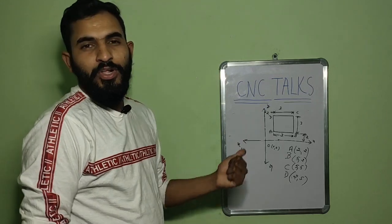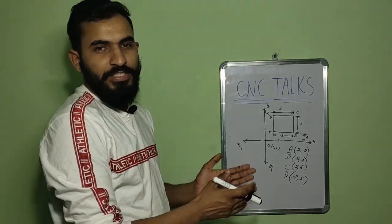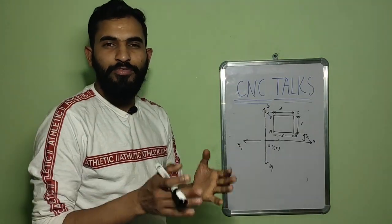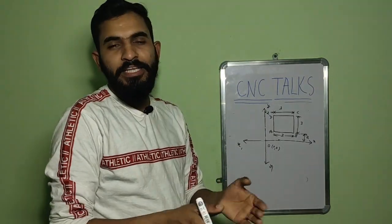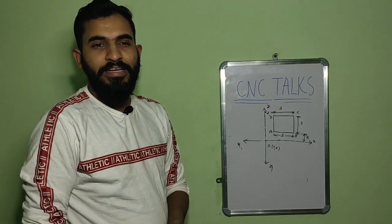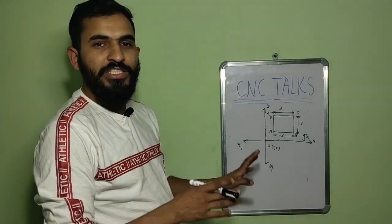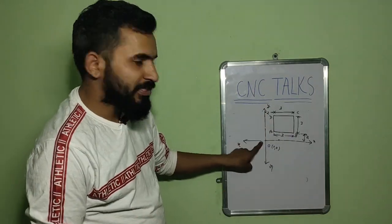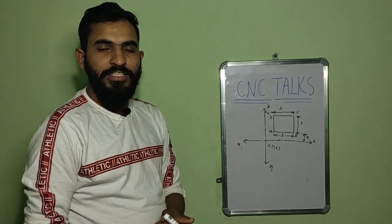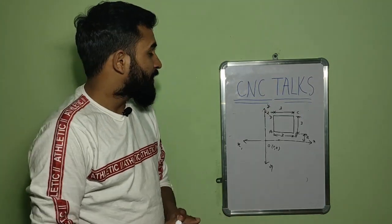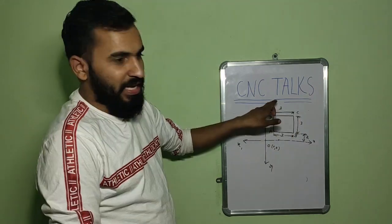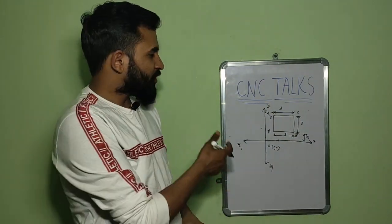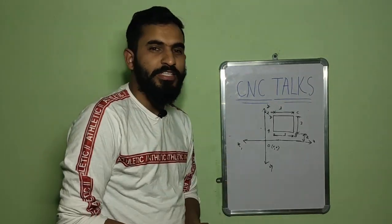Now let's solve this cube with the help of the incremental coordinate system. The basic difference between an absolute and incremental coordinate system is that in an absolute system, there is only one fixed origin and all the dimensions will be taken from this origin. But in an incremental coordinate system, there is no fixed origin — as we move to the next point, our previous point becomes the origin.